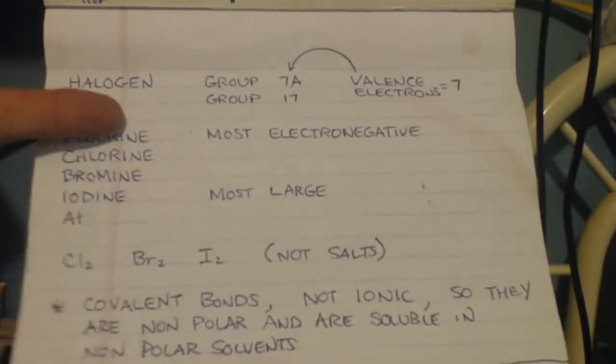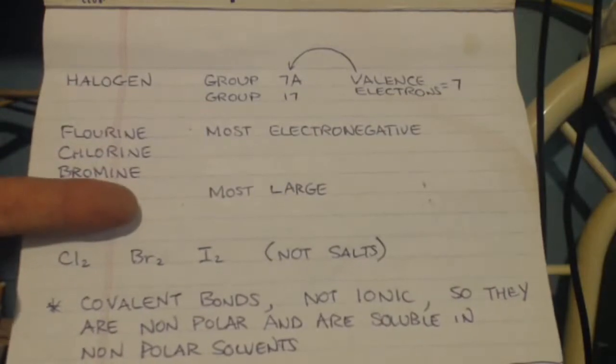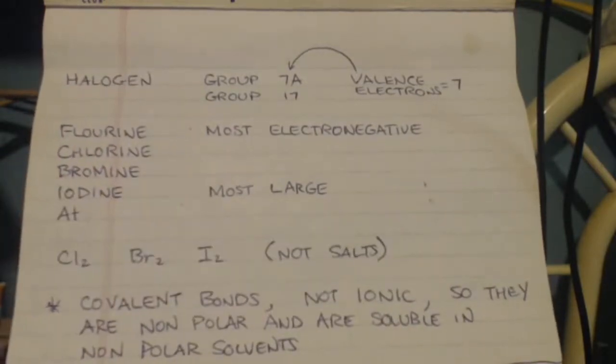At the top of the list, it's more electronegative. At the bottom of the list, they're bigger, they're larger. Fluorine is smaller than iodine. It's smaller than chlorine. Chlorine is smaller than bromine, etc.